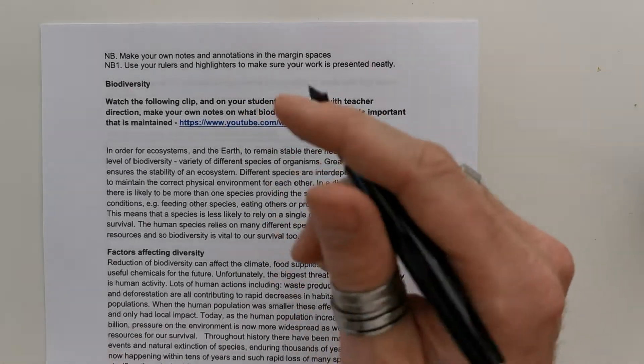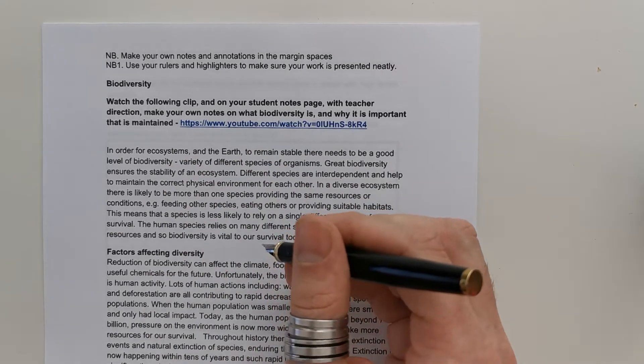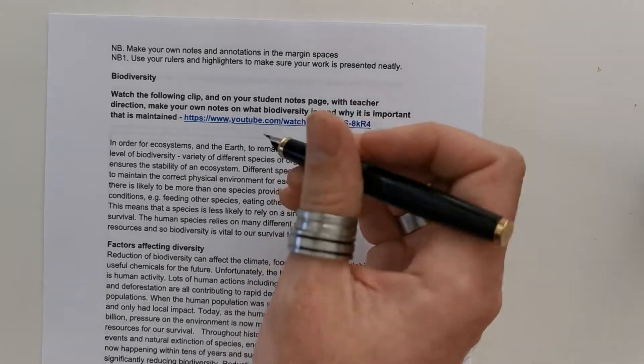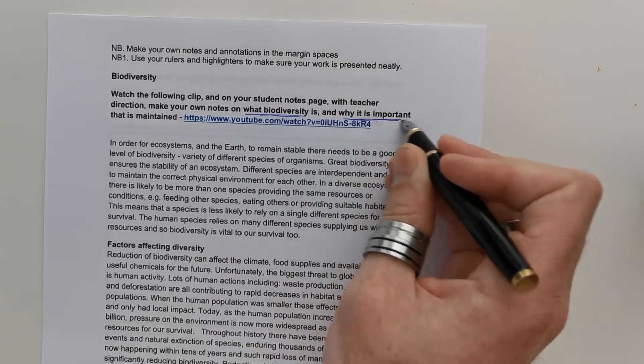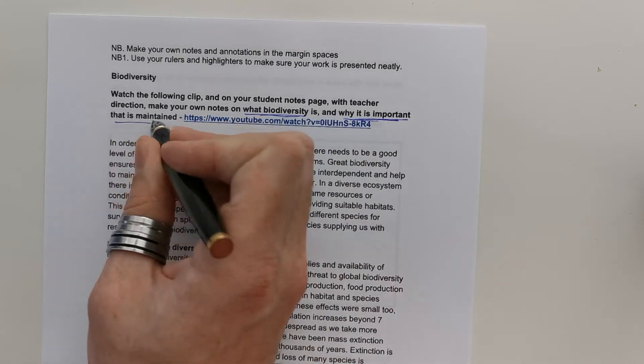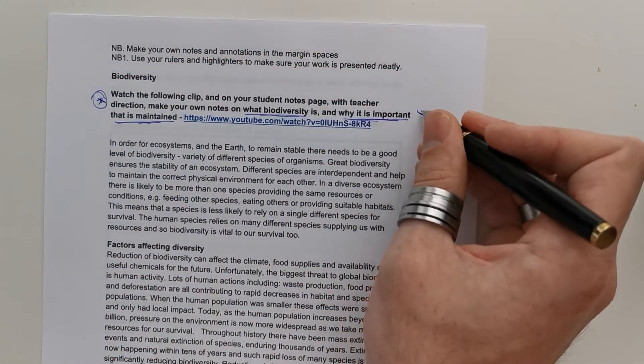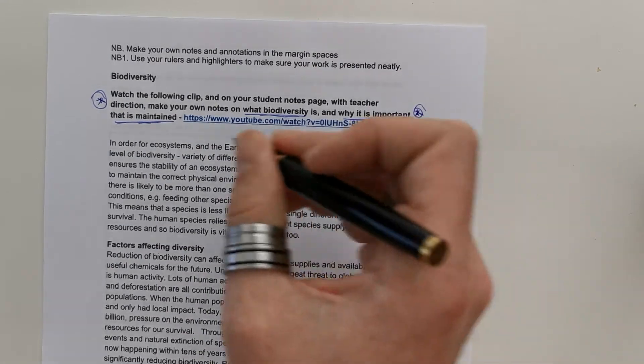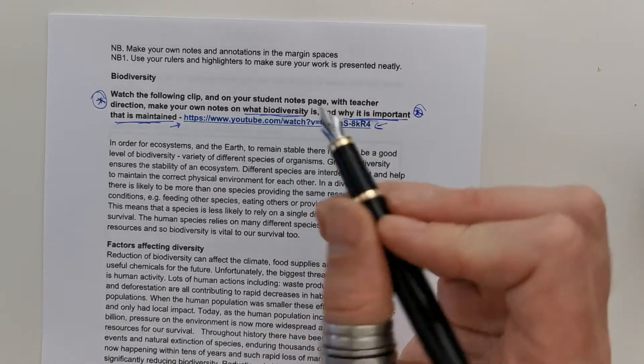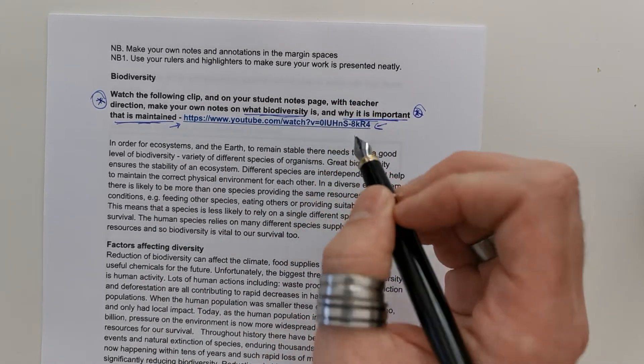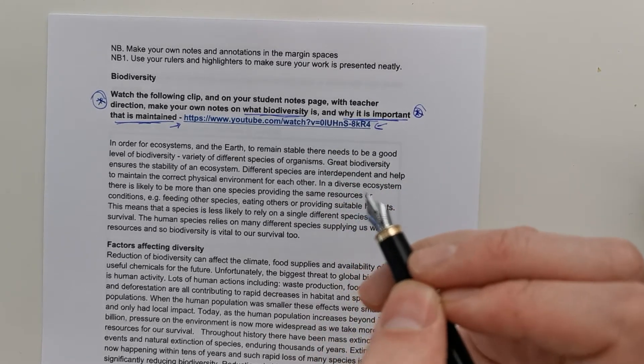So, at the top of the page, as you see, there's an instruction straightaway which says, watch the following clip. And on your student's notes page, make your own notes as to what biodiversity is and why it's important that it's maintained. So, that's your first task. Stop the video. In your resources, get the YouTube link open. Use the link in the comments below, or any of the PDFs, or things like that your teacher might have sent you. And watch this, and make some notes on what biodiversity is and why it's important. Once we've done that, we'll go into it in a little bit more depth.